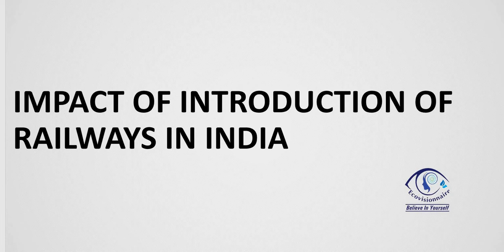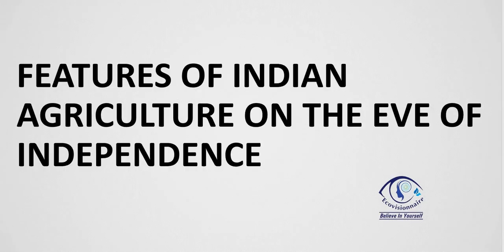The fifth and last topic to cover in chapter one is the impact of introduction of railways in India. This falls under infrastructure development during the British period. The most important aspect is understanding the basic motive behind the British introducing railways, what their impact was, and how Indians used it in their own favor.